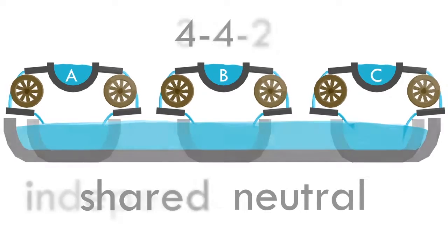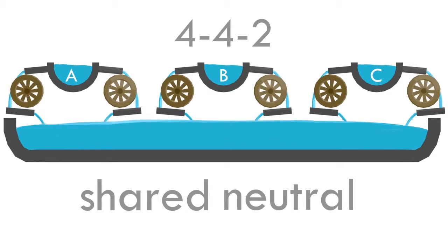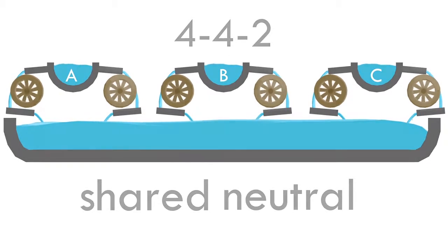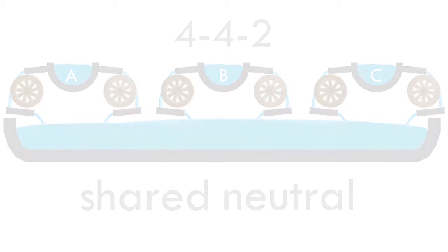Or as a shared neutral, which is used by all three phases in one run back to the panel. This is a five-wire system. Fewer wires means less cost. However, it's entirely up to the local electrical code to determine the neutral type required.